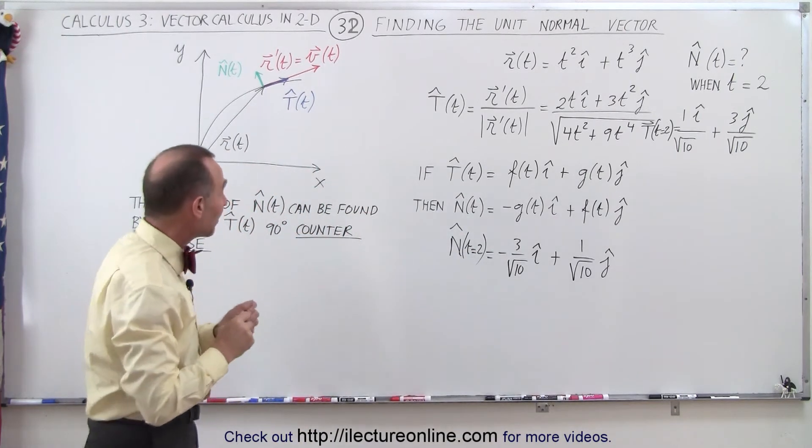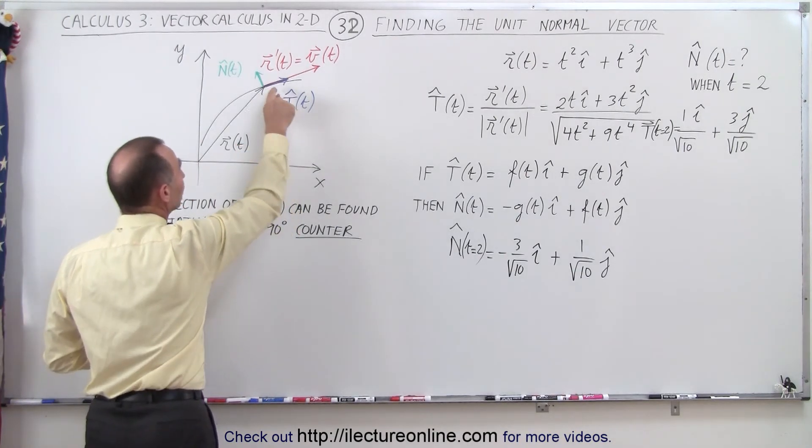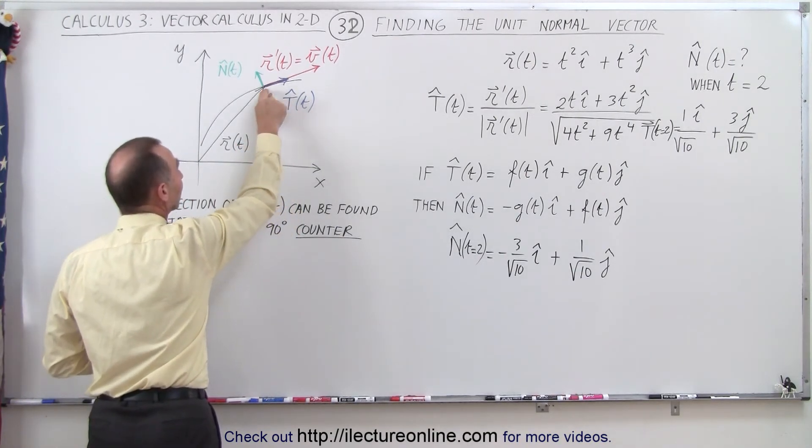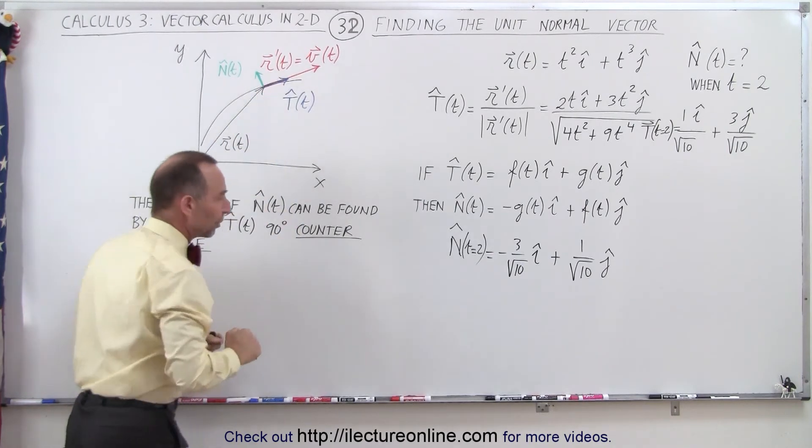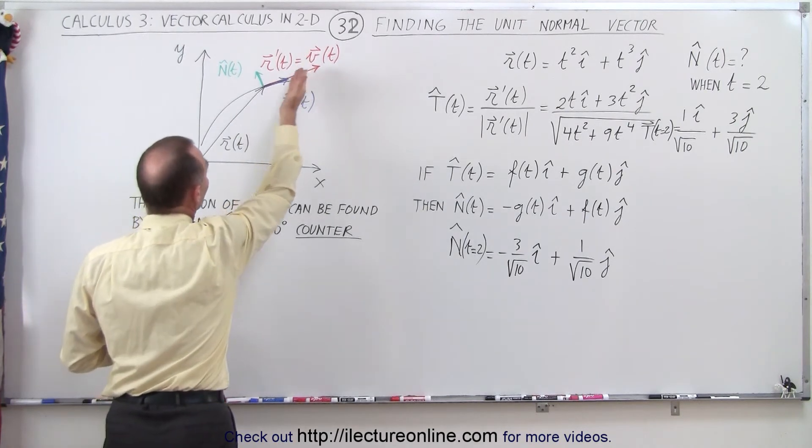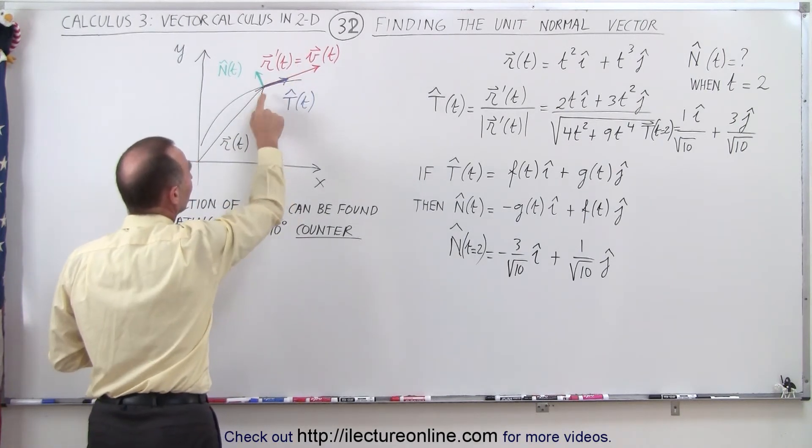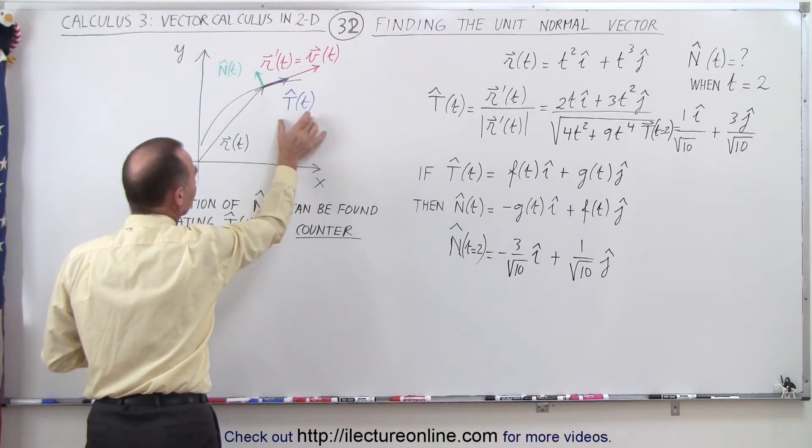Another thing that might be useful to know is that the unit tangent vector is parallel to the curve at the location where the position vector is pointing to. If the parametric variable is time, then it would be parallel to the velocity of a component on that curve. We divide that by its own magnitude to find the unit tangent vector.